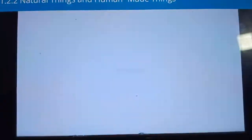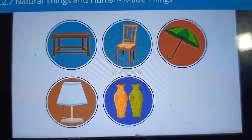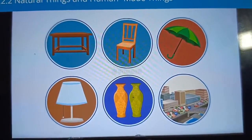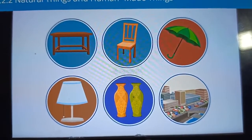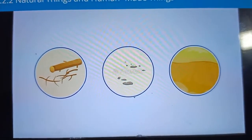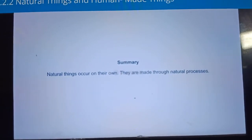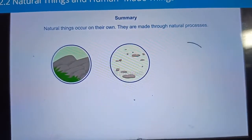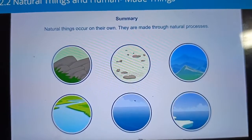The things we see in our houses like tables, chairs, umbrellas, lamps, flower vases, and things like cars, buses, roads and buildings are all human-made things. While making these things, human beings use natural things like wood, stones, mud, etc. Natural things occur on their own. They are made through natural processes. Rocks, stones, mountains, rivers, seas and oceans are natural things.